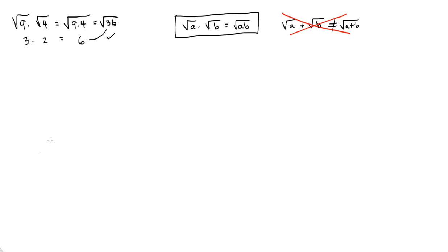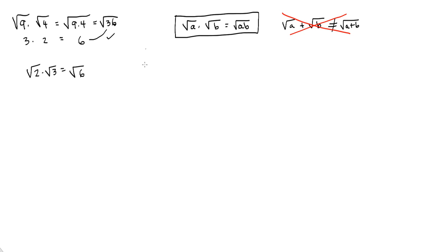Which makes multiplication kind of easy, sort of. So if I had radical 2 times radical 3, what would be my answer? Pretty simple — radical 2 times radical 3 is radical 6.